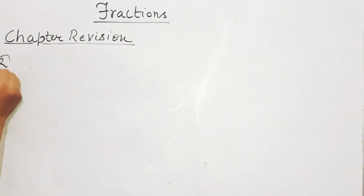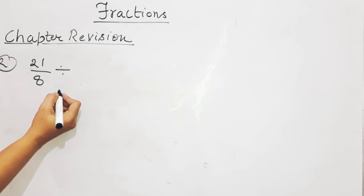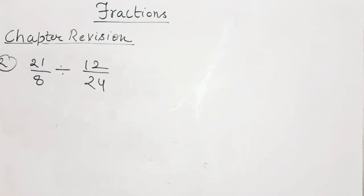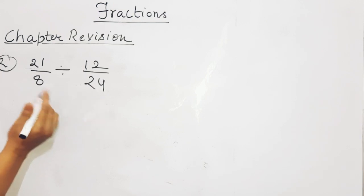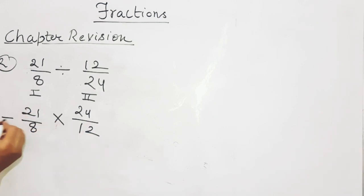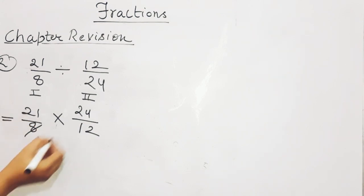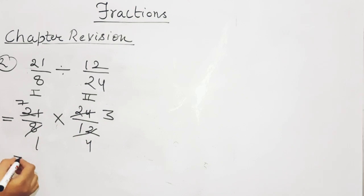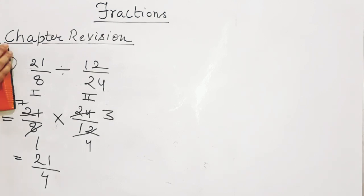Question number 2 is division of fractions. The first step: check if any fraction is a mixed fraction — if so, convert to improper fraction. Then take the reciprocal of the second fraction and multiply with the first. After reducing: 8 ones are 8, 8 threes are 24, 3 fours are 12, 3 sevens are 21. The answer is 21 upon 4.